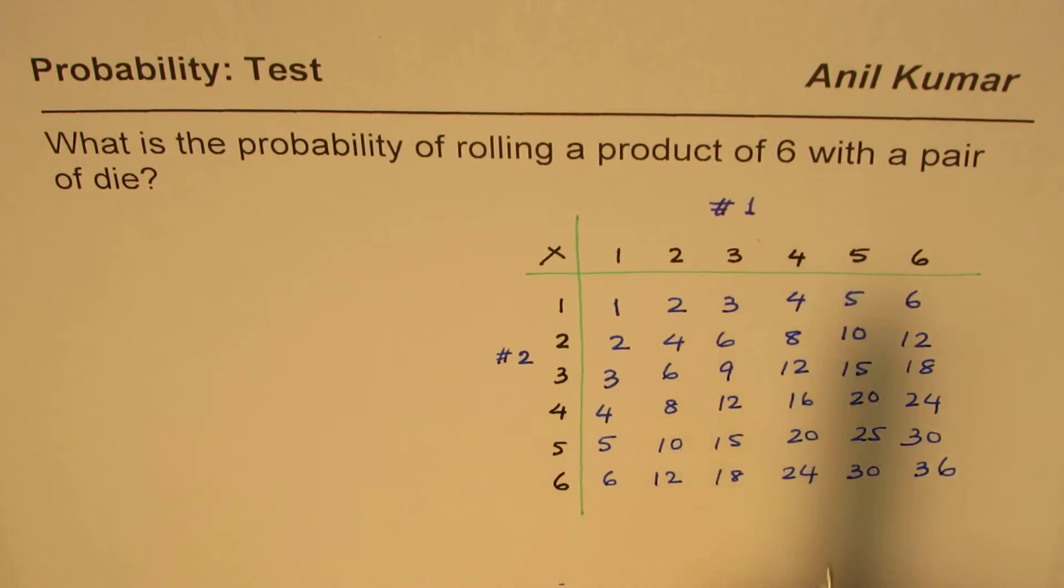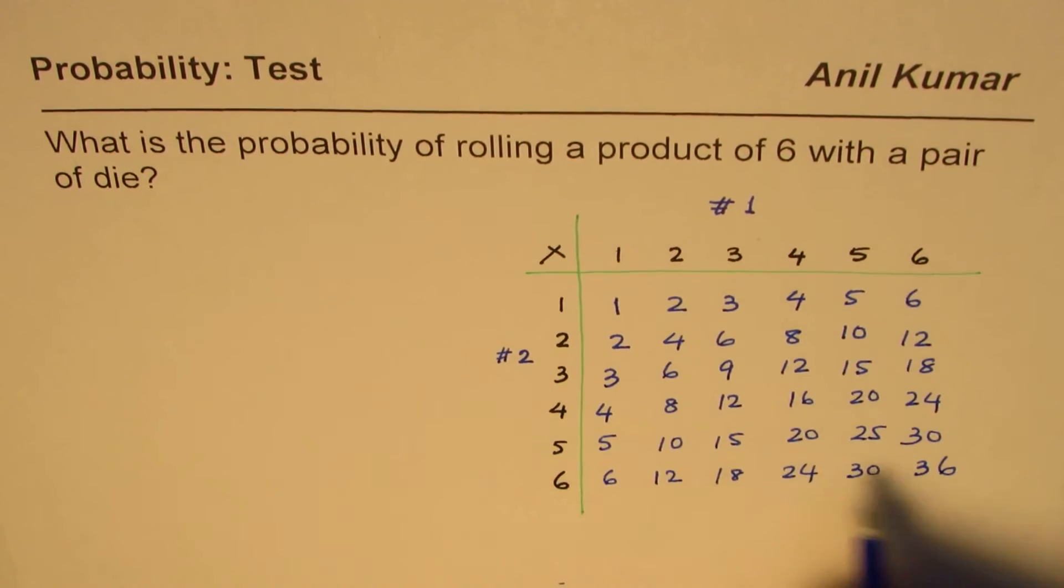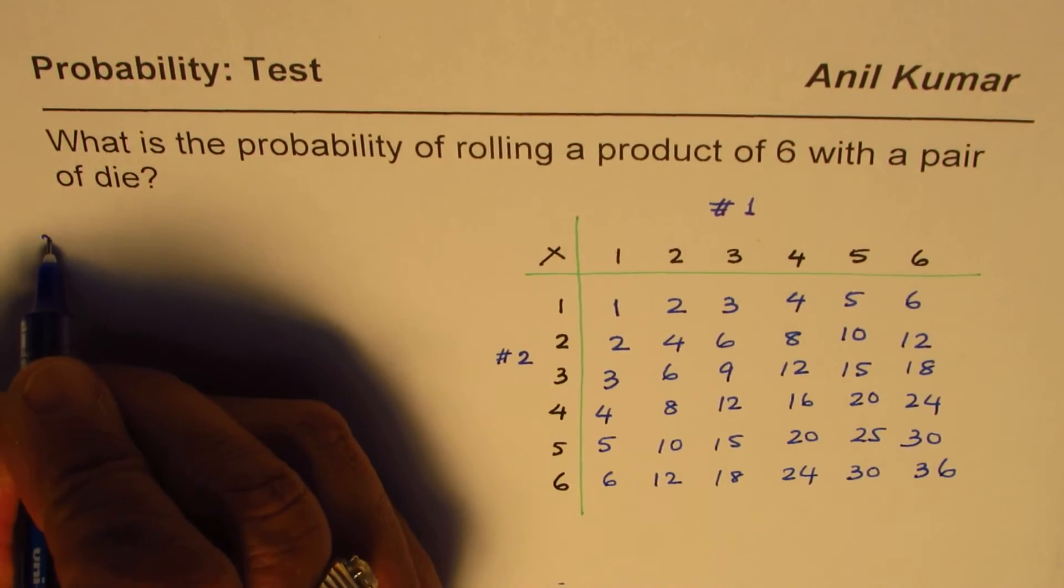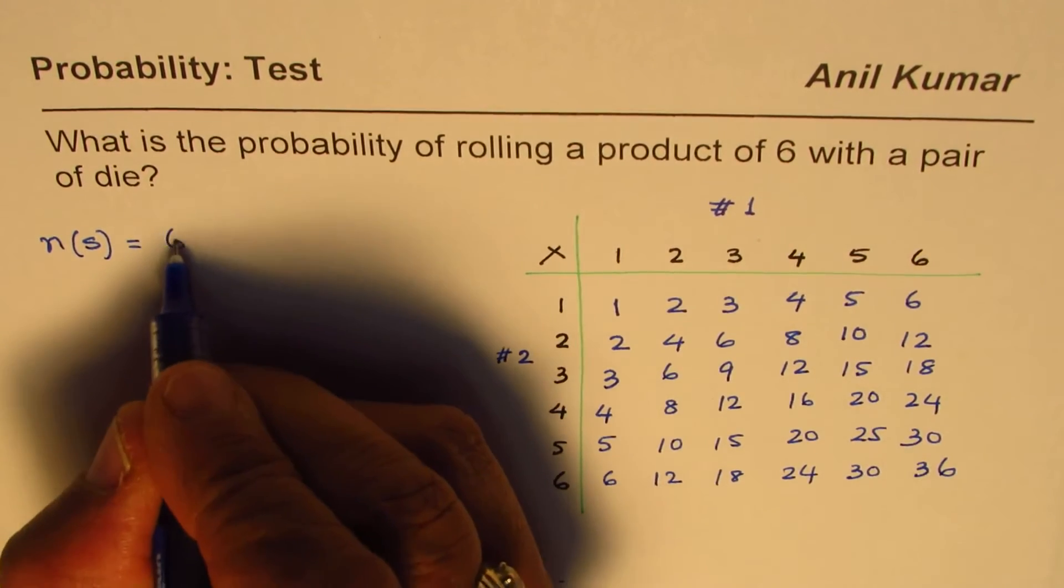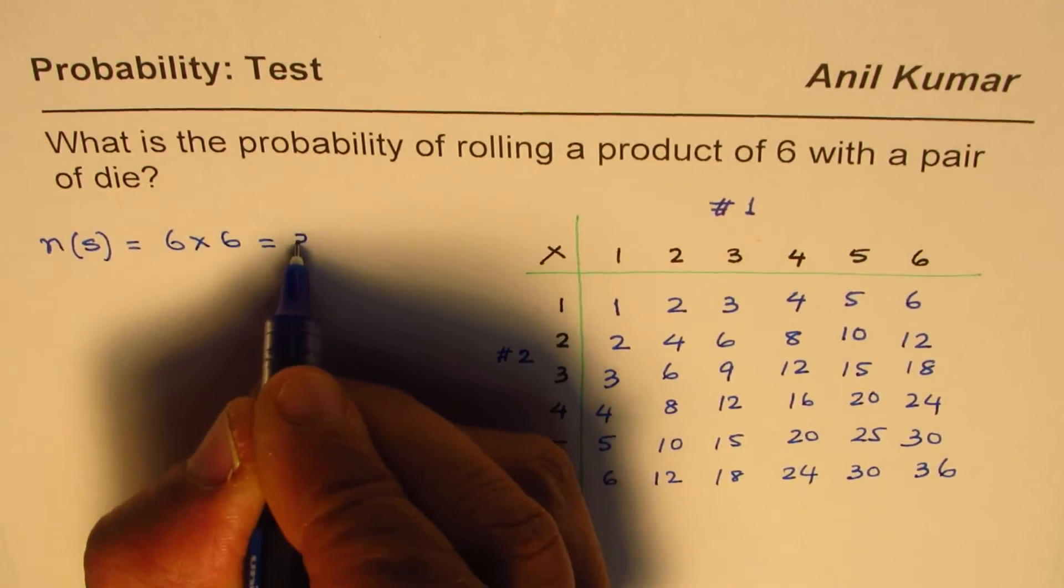So we need to find probability of rolling a product of six with a pair of die. In the sample space, how many elements are there? There are six times six elements. Six times six is 36.